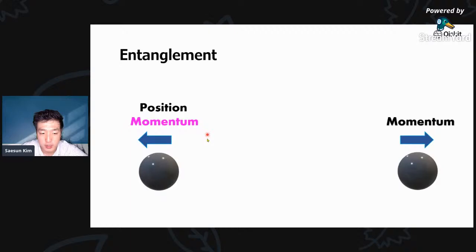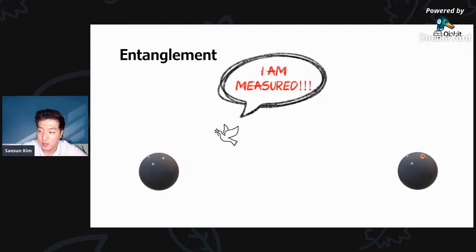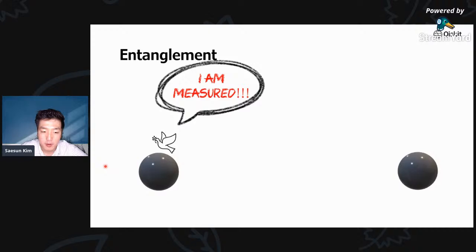The only way to save quantum mechanics is if, when I measure one particle's momentum, the other particle is instantly informed and collapses from a wave to a particle. So the information must travel to the other party instantaneously, no matter how far apart the two objects are. This means information somehow travels faster than light, which is crazy. Einstein called this 'spooky action at a distance,' and it sounded like Einstein was correct because it seems insane to believe they can affect each other across a large separation.